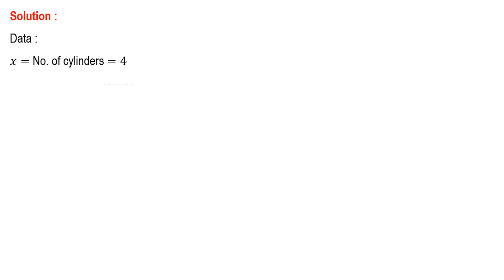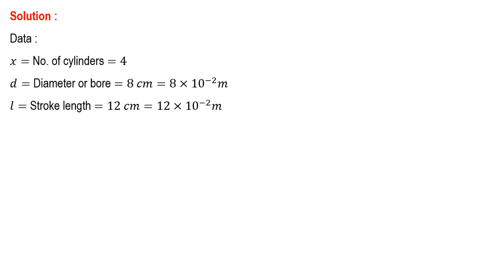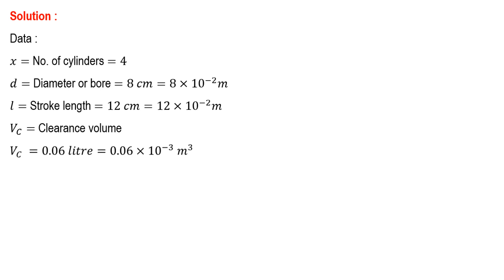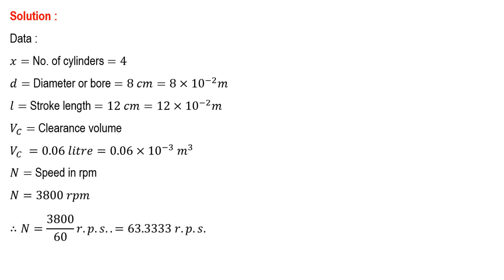Let us start with the given data and convert it into appropriate units. Number of cylinders x equals 4. Bore diameter D equals 8 cm, converted to meters. Stroke length L equals 12 cm, also converted to meters. Clearance volume: 1 liter equals 10 to the minus 3 cubic meters, so 0.06 liters equals 0.06 into 10 to the minus 3 cubic meters. Speed is 3800 rpm, converted to 63.333 revolutions per second.